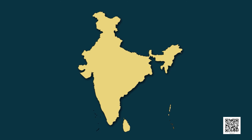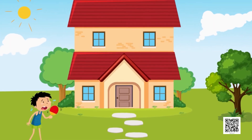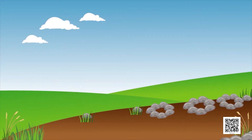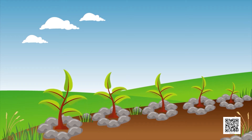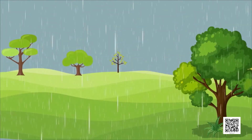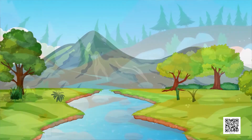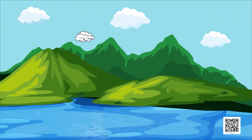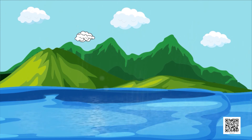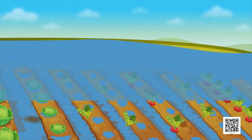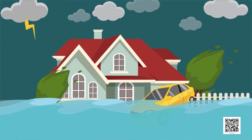In our country, most of the rainfall occurs during the monsoon season. Rains bring relief especially after hot summer days, and the sowing of many crops depends on the arrival of the monsoon. However, excess rainfall may lead to many problems. Heavy rains may lead to a rise in the level of water in rivers, lakes and ponds. The water may then spread over large areas, causing floods. Floods cause extensive damage to crops, domestic animals, property and human life.